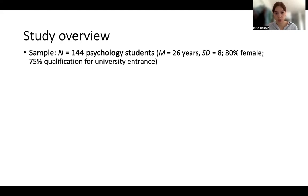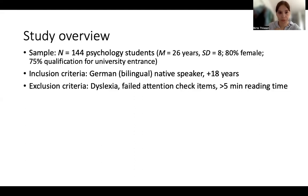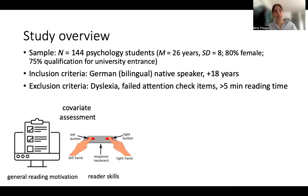To study this empirically, we had a sample of 144 psychology students, average age 26 years, a whopping 80% of them female, and 75% holding a university entrance qualification — so relatively highly educated. Our inclusion criteria were German native speaker or bilingual native speaker, and participants had to be above the legal age in Germany. Exclusion criteria included dyslexia, failing our embedded attention checks, or reading for less than five minutes — since eye movement research tells us that would not be a realistic reading time for the text.